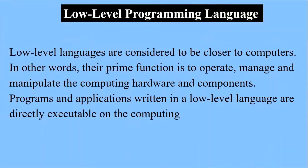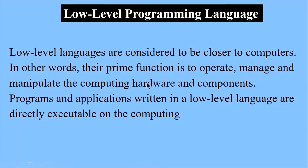Low-level programming languages are considered to be closer to computers. In other words, their prime function is to operate, manage, and manipulate computing hardware and components. They are not easy to understand. Since they are closer to the hardware, they are in the form of 0s and 1s — binary language — which is also called machine language.